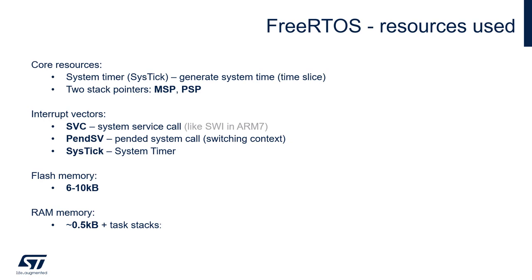FreeRTOS uses three interrupt vectors: SVC (System Service Call), which is a software interrupt used only once to start the operating system after reset; PendSV (Pended System Call), used to switch context between tasks; and SysTick, used to generate time-slice moments indicating when to switch context. Memory usage ranges from 6 to 10 kilobytes depending on components, plus approximately half a kilobyte per component — tasks, semaphores, mutexes, and software timers each add to this.